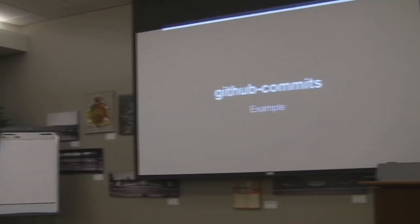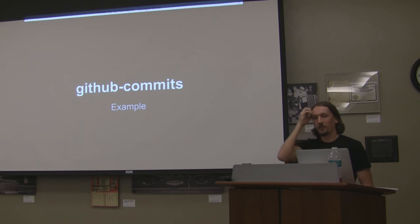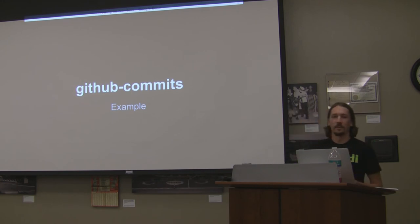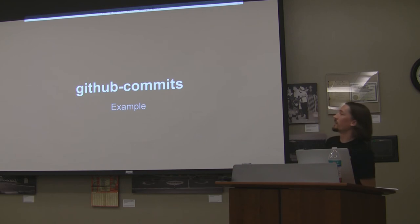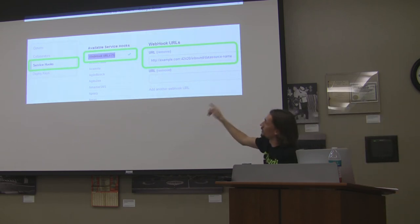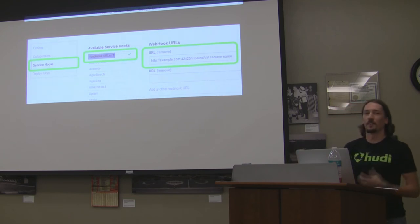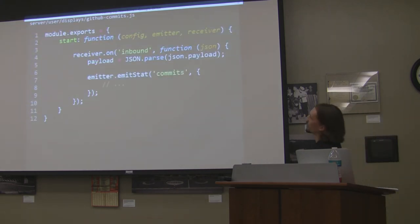Polling is cool, but sometimes some services don't really work that way. GitHub is a great example. GitHub repositories are capable of firing off an event called a post-receive hook anytime something significant happens — a merge, a commit. The way it works is when that event occurs, it makes an HTTP POST request out to some endpoint. So you need to actually have an endpoint for it to send those things to you. In GitHub's service hooks, you can specify a URL and it sends you a huge JSON payload with all the commits and anything that happened in that event.